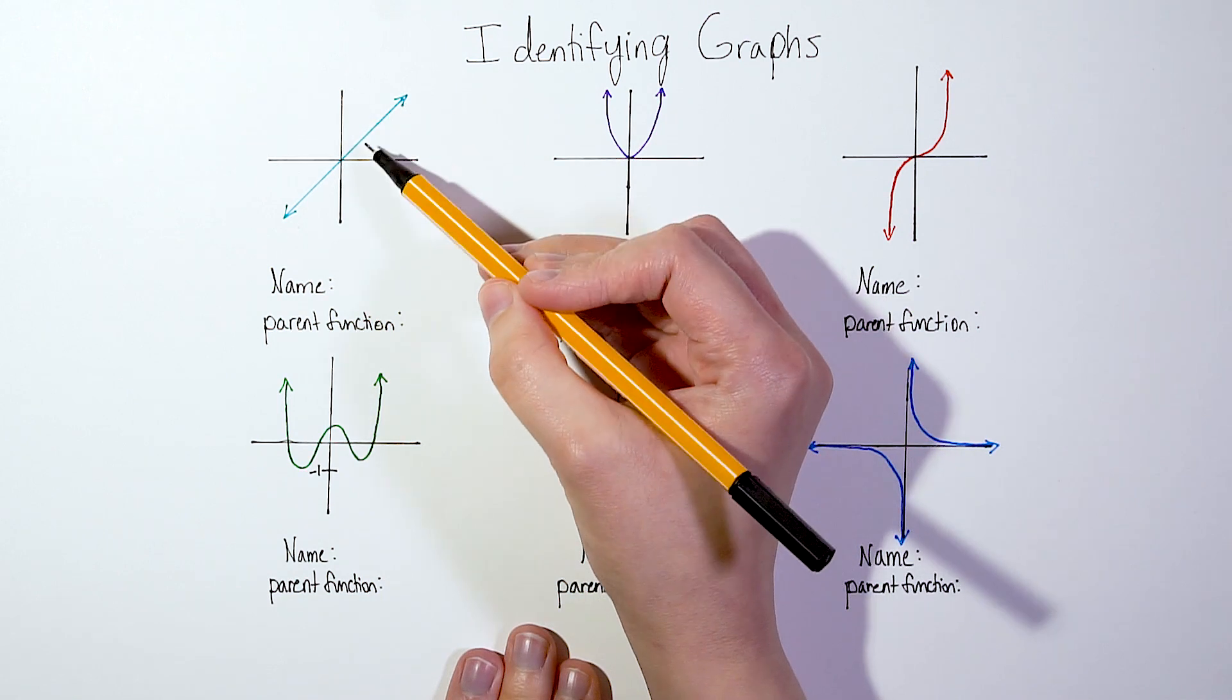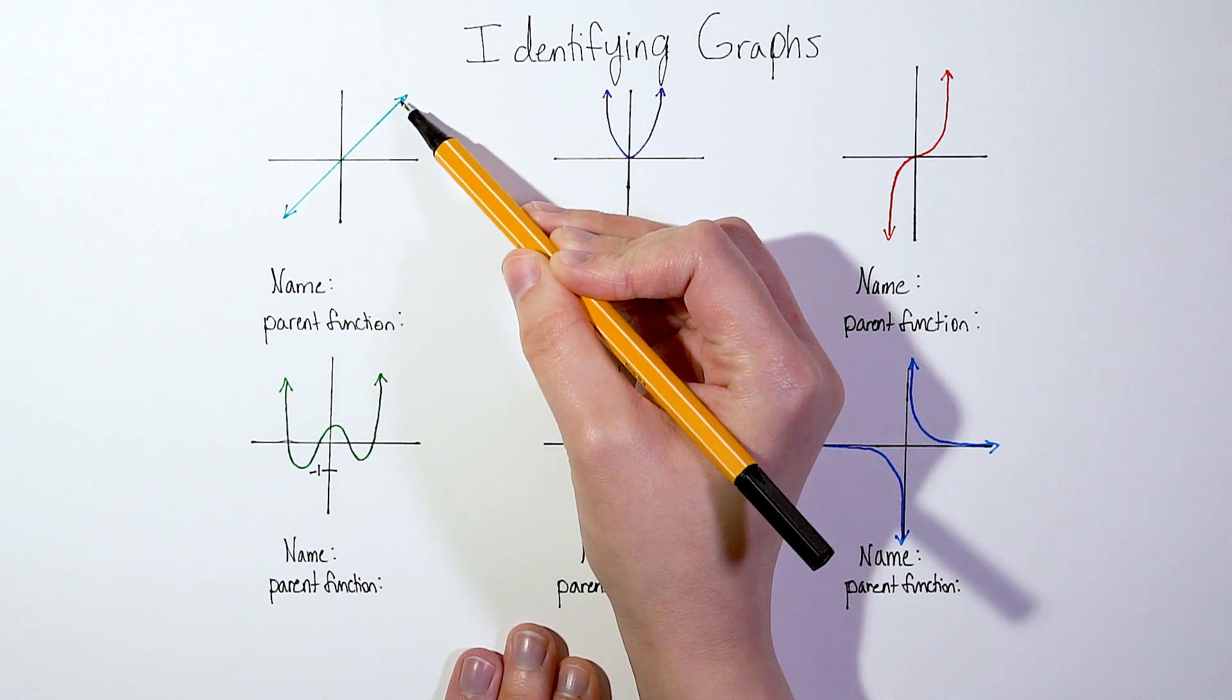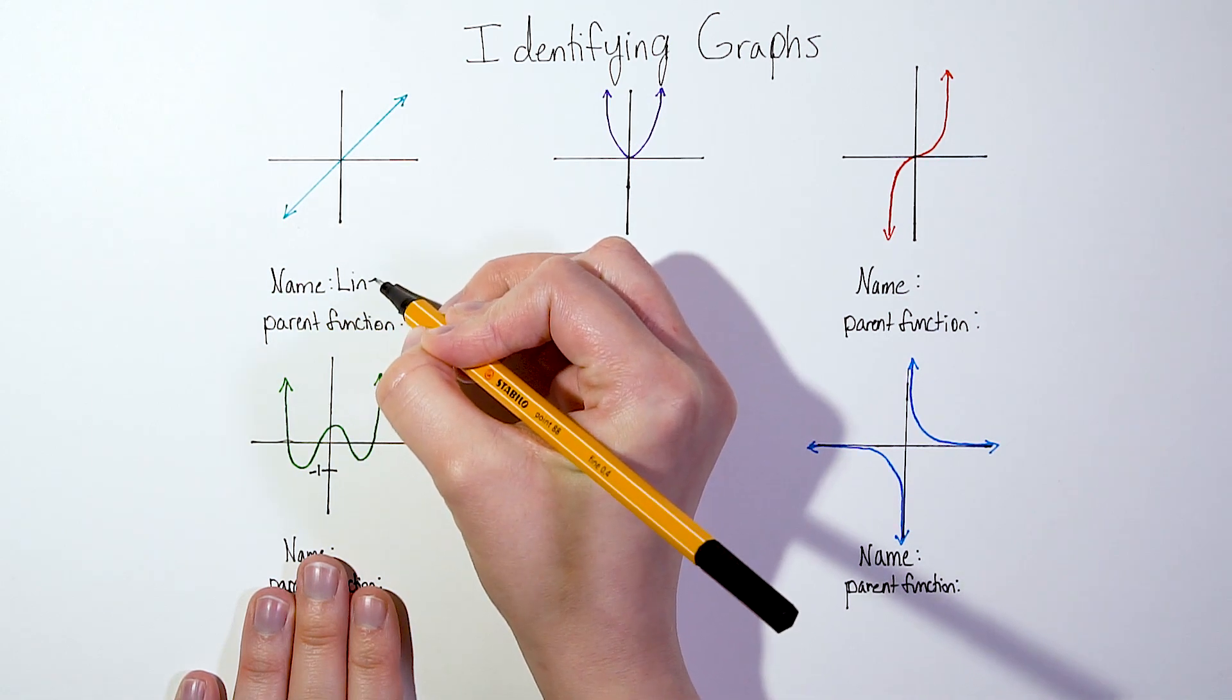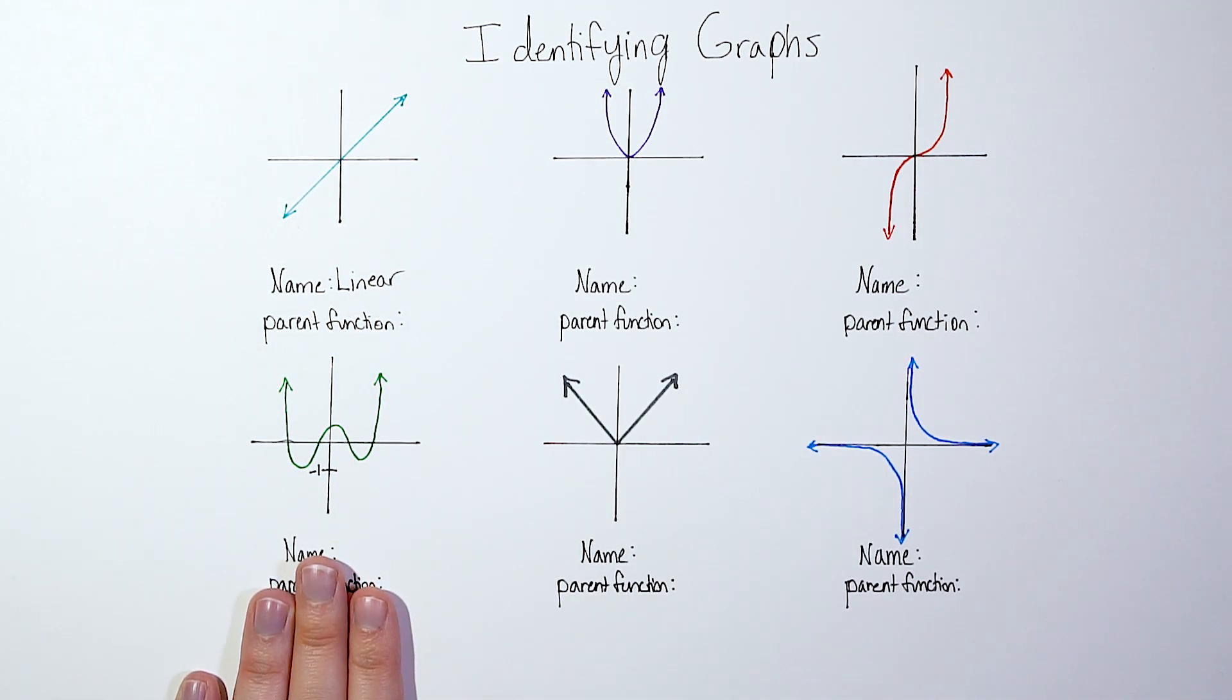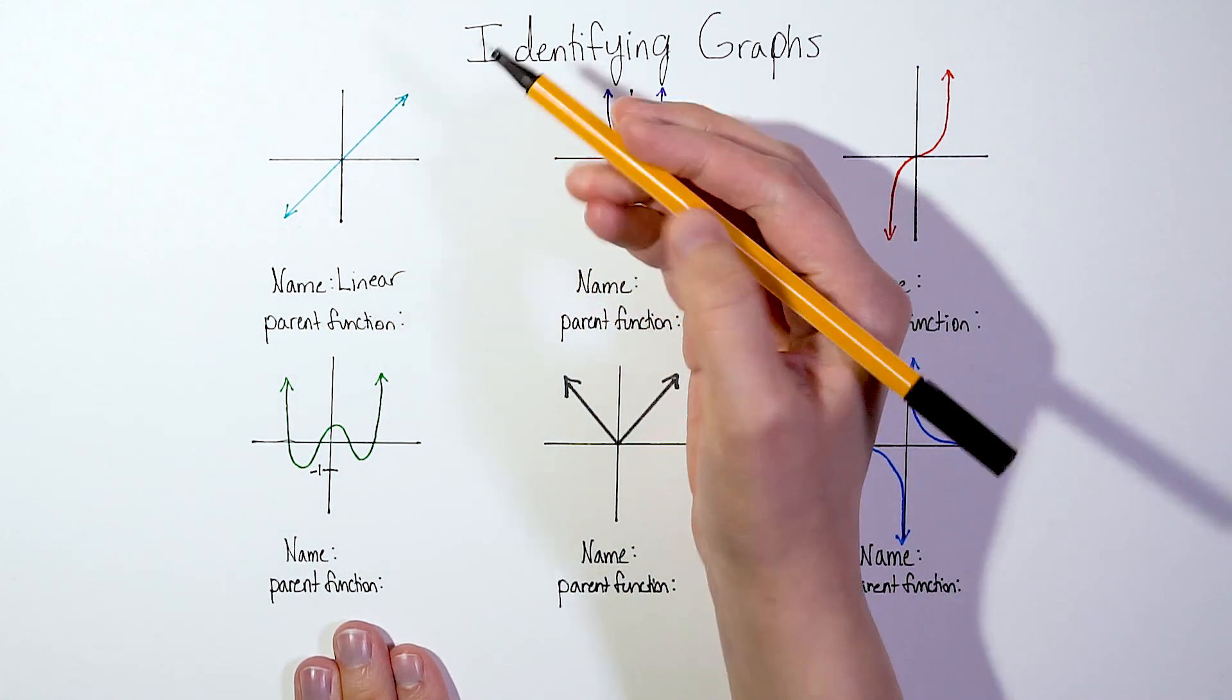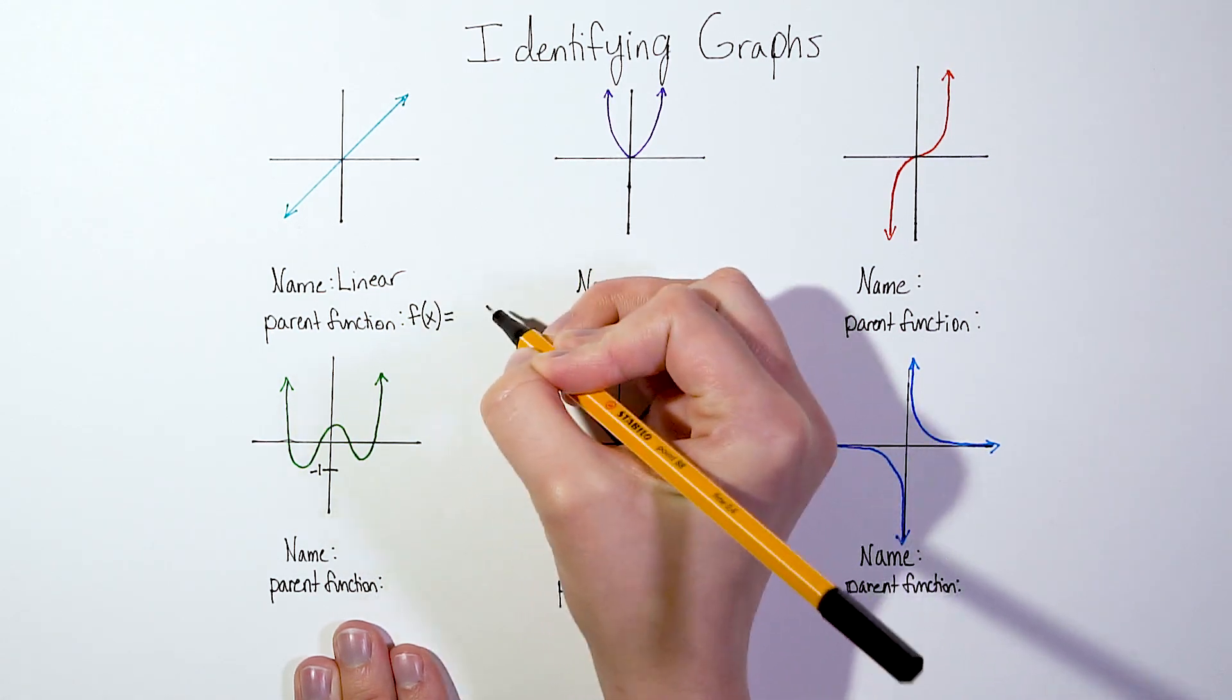In this first graph, this blue graph here, notice that we've got a straight line. Anytime we have a straight line and we've got arrows at the end, this is called a linear function. And when we want to say the parent function, the parent function is pretty much the basic equation, the most basic equation that we can get.